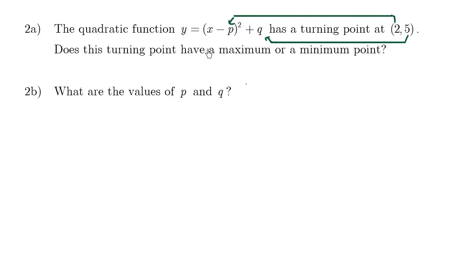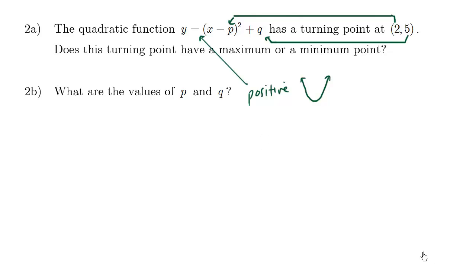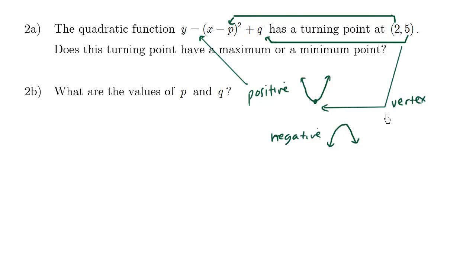When we look at this vertex form, we pay attention to the a value. In this case, there's nothing here, which means we're multiplying by 1, and the number 1 is positive. If we have a positive a value, it means this parabola is making a happy face, going this way. But if the a value is negative, it means that we have a sad face — the parabola is going this way. Here we have the vertex, and this vertex happens to be a minimum point.